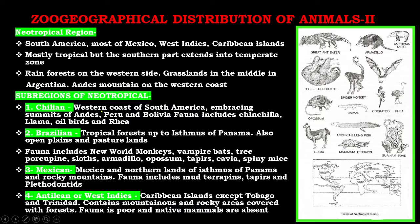The Chilean sub-region includes the western coast of South America, embracing summits of the Andes, Peru, and Bolivia. Fauna includes chinchilla, llama, oilbird, and rhea. The Brazilian sub-region covers the tropical forests up to the Isthmus of Panama, also open plains and pasture lands. Fauna includes New World monkeys, vampire bats, tree porcupine, sloth, armadillo, opossum, capybara, and spiny mice.